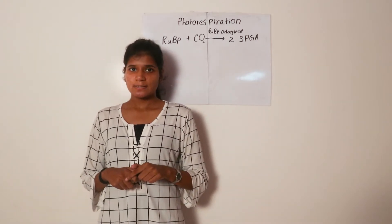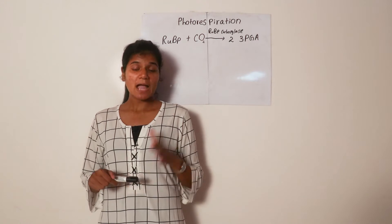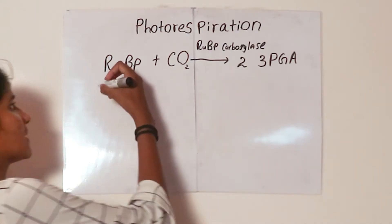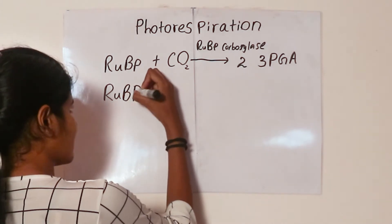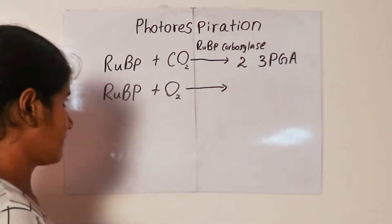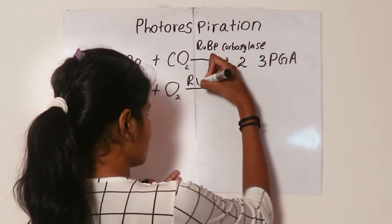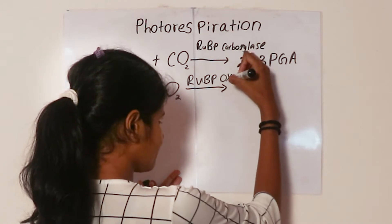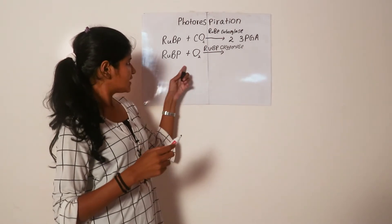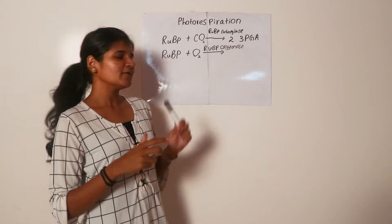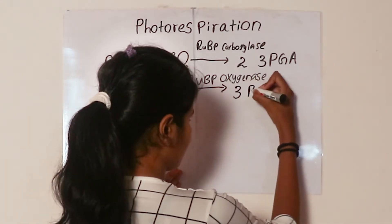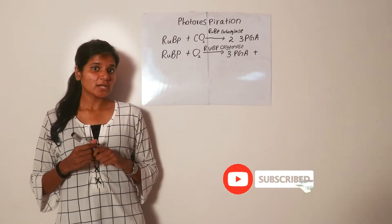Imagine if the oxygen concentration in the leaf is higher than the carbon dioxide concentration. Then RuBP goes and binds with oxygen, because there is more oxygen inside the leaf than carbon dioxide. The same enzyme can act either as a carboxylase or as an oxygenase. If this oxygenase reaction occurs, then only one molecule of 3-phosphoglycerate will be formed, and one molecule of 2-phosphoglycolate is formed.